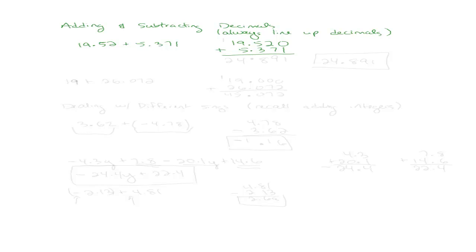Now I'm just going to add. And the only role the decimal point is going to play is that it's going to come straight down. And that's why we're lining them up. Other than that, you're going to add just like if they were whole numbers. So 0 plus 1 is 1, 7 plus 2 is 9, 5 plus 3 is 8, 9 plus 5 is 14, carry the 1, 1 plus 1 is 2. So my answer, 24 and 891 thousandths.